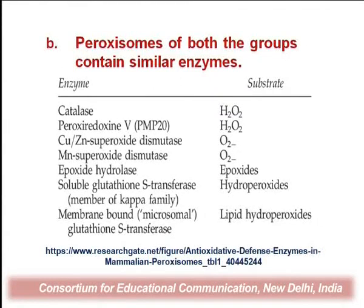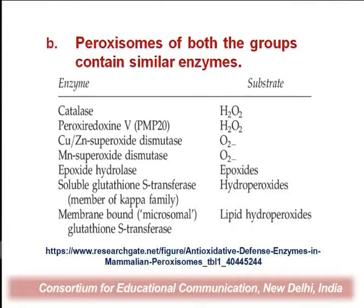The other common feature shared between carophyteens algae and land plants is the presence of peroxisomes and the group of enzymes contained inside these peroxisomes — for example, enzymes like catalase, peroxiredoxin, copper-zinc superoxide dismutase, manganese superoxide dismutase, and epoxide hydrolase. These are commonly found in carophyteens algae as well as in the peroxisomes of the cells of land plants.